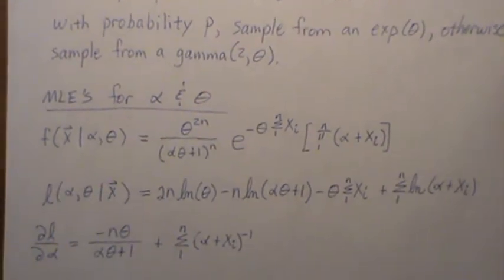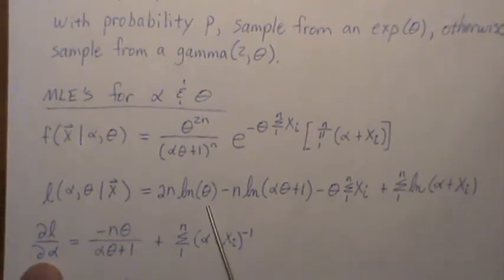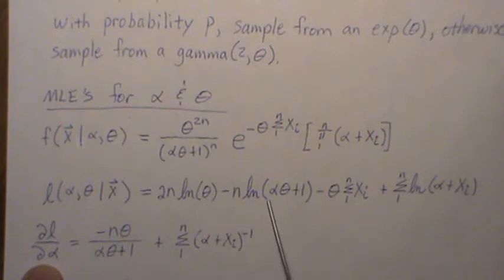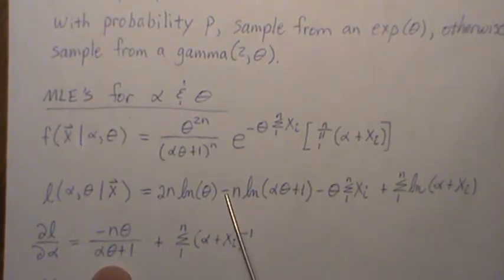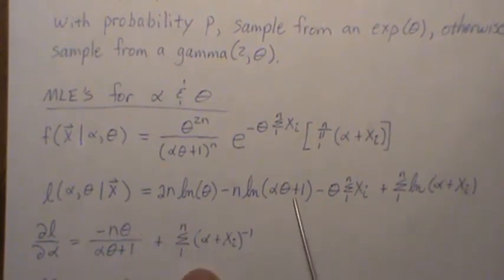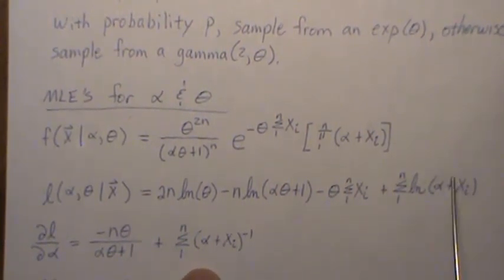Now, we start taking partial derivatives. First, let's take it with respect to theta. The minus n comes out. That's a constant. And it's one over this, and then times the derivative of this with respect to alpha, which is theta. That's constant. Here, we get one over alpha plus xi.